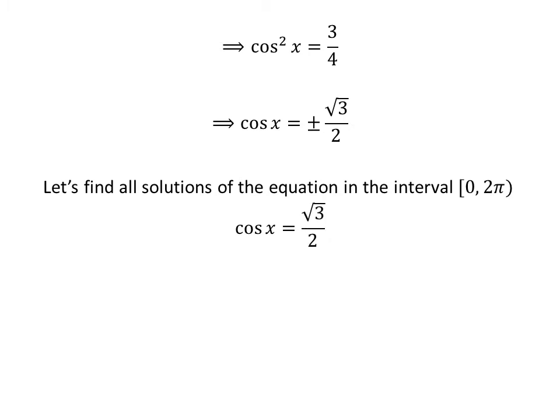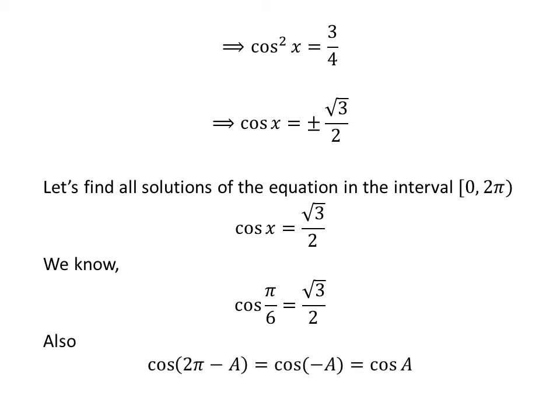Let us first find the solutions to the equation cosine of x is equal to square root of 3 upon 2 in the interval 0 to 2 times pi. We know the value of cosine of pi upon 6 is square root of 3 upon 2. We know the value of cosine of x repeats after the interval of 2 times pi. So cosine of 2 times pi minus a is equal to cosine of minus a. We also know the trigonometric identity cosine of minus a is equal to cosine of a.